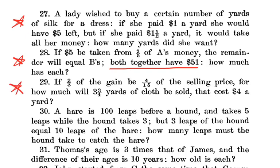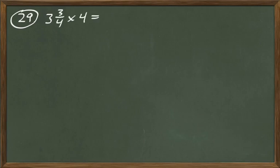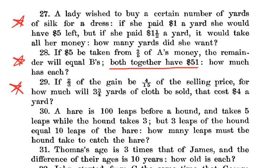Problem 29: if two-thirds of the gain is four-fifteenths of the selling price, for how much will three and three-fourths yards of cloth be sold that cost $4 a yard? First, find the cost: three and three-fourths yards times $4 a yard equals $15. So $15 is our cost. Now we use the hint about the gain: two-thirds of the gain equals four-fifteenths of the selling price.